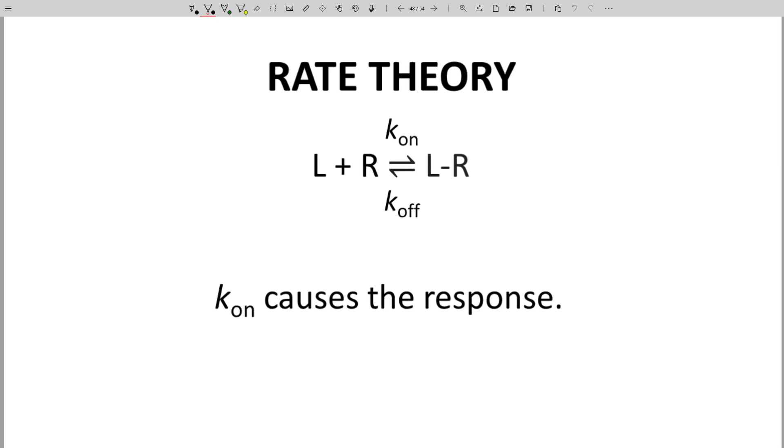We need to think about rate constants – K-on and K-off. K-on is important because that causes the response. K-off is also important because the ligand cannot activate a receptor again until it comes off to regenerate the free receptor.